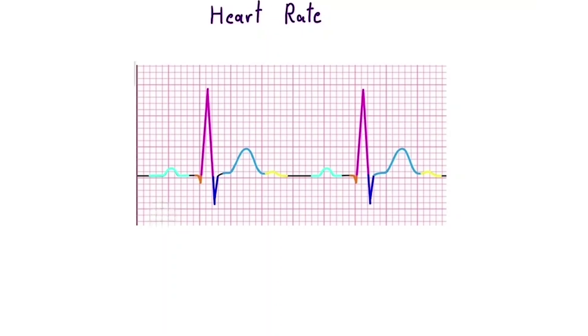So how can we determine the heart rate on an ECG? The method is simple. Take a look at this ECG strip. First, identify two consecutive R waves. Then, count the number of large squares between them. For example, in this ECG, there are four large squares between two R waves. Now, divide 300 by that number.